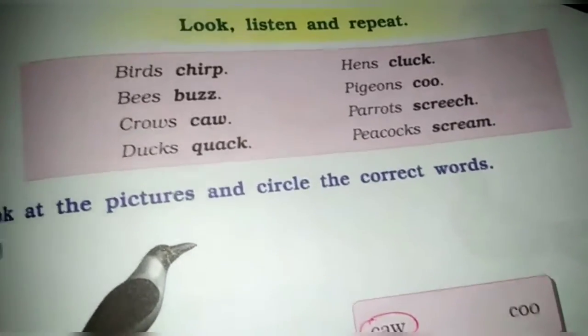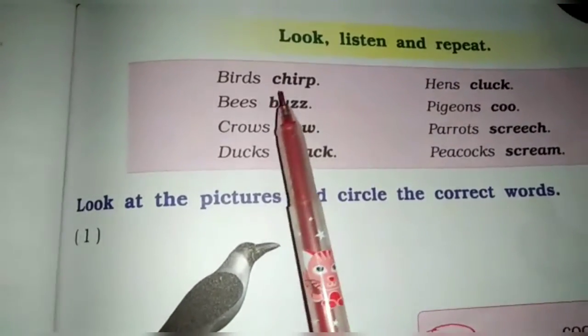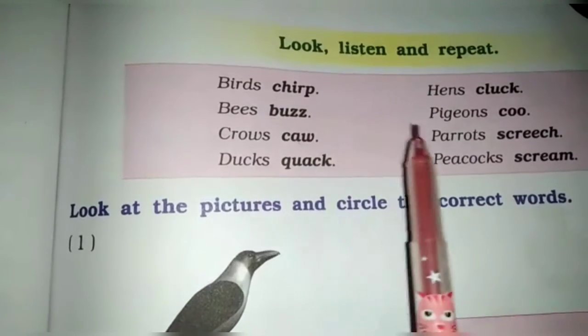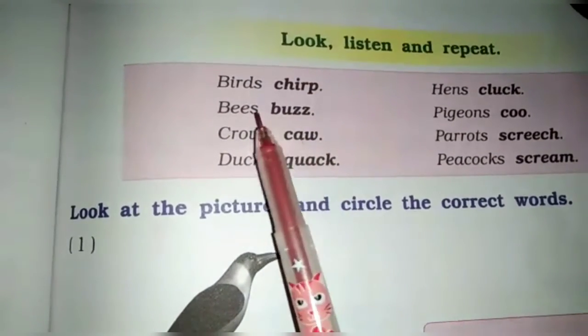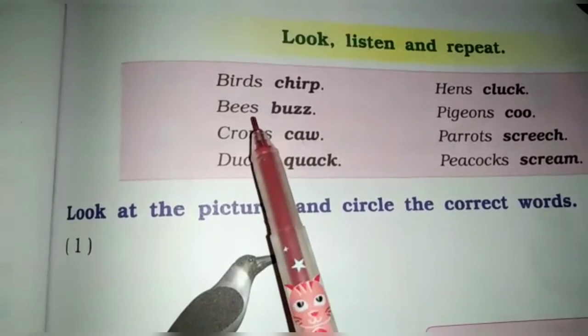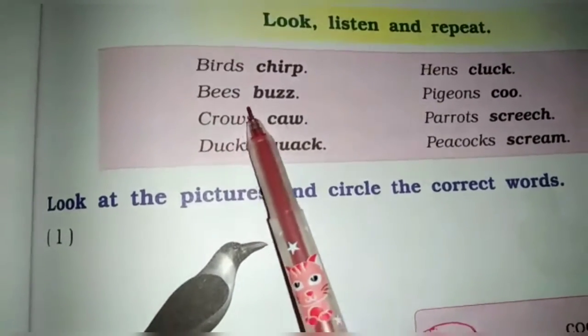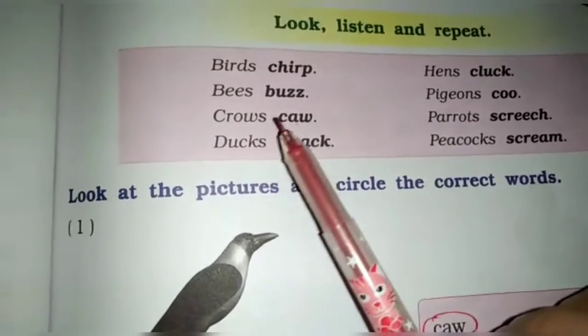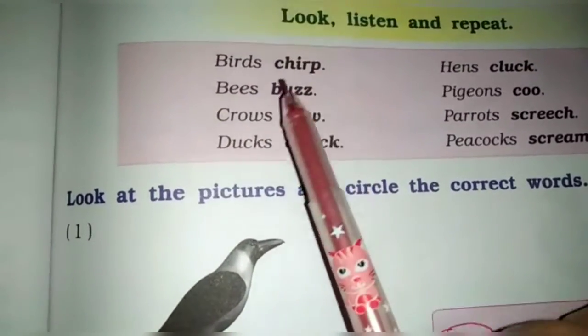Now page number 93. Look, Listen and Repeat. There are bird's name and its sounds. जैसे के animals के होते हैं ना, The lion says roar. ऐसे. So birds and their sounds.